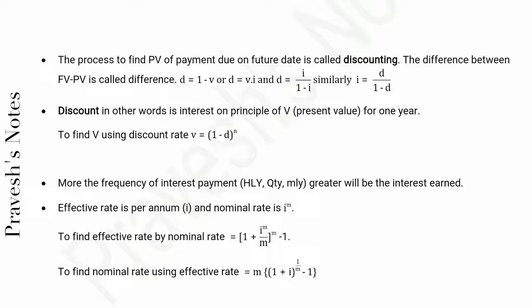Discount in other words is interest on principal of V (present value) for 1 year. To find V using discount rate: v = (1 - d)^n.